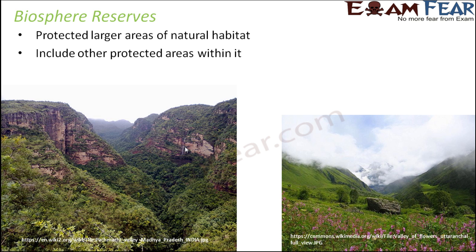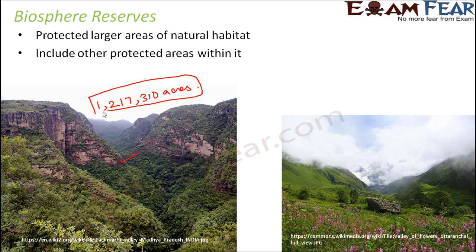Let us take one example. Here you can see Panchmari valley, which is in Madhya Pradesh. In the Panchmari biosphere reserve the total area is very huge — you can imagine how big it is. When we were talking about national parks, I mentioned that the minimum size is 1000 hectares, so from such a large figure you can imagine how big a biosphere reserve can be. This Panchmari biosphere reserve includes the Satpura National Park within it.